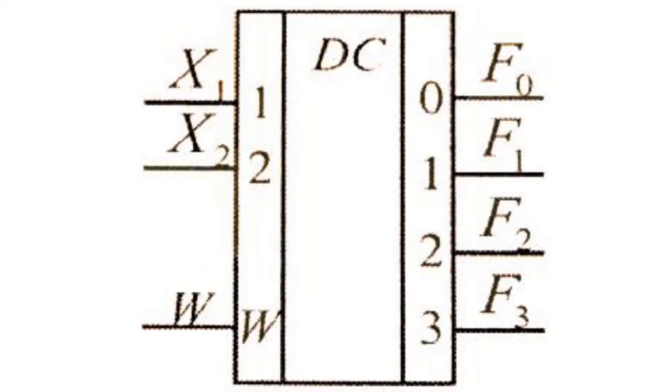This means that if 00 is applied to a decoder's input, we get 1 at the 0 output. If the signal 01 is applied, we get 1 at output 1. If signal 10, we get 1 at output 2, and so on and so forth.